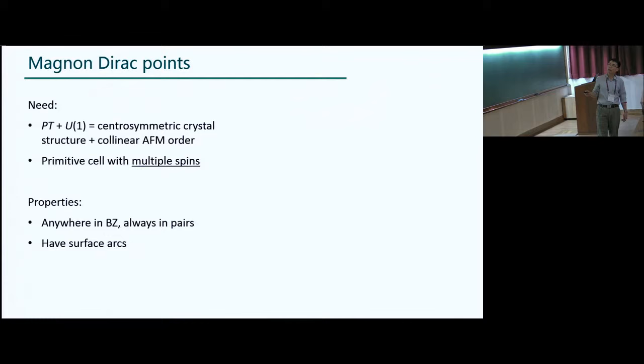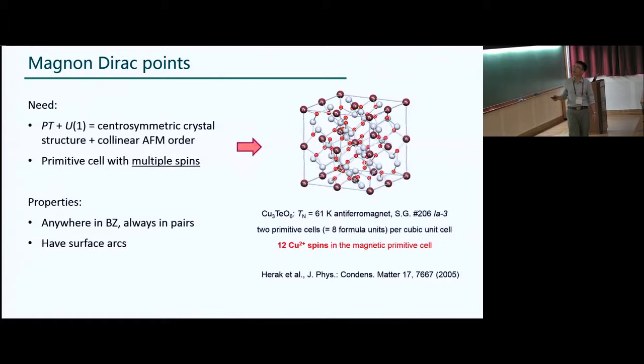So then, on the material side, the requirement is just this symmetry, plus the fact that the magnetic primitive cell must have multiple spins, so that you have multiple magnetic bands to cross into each other. And with this in mind, we actually were very greedy, because we then hunt for material with many spins in the primitive cell. In this case, actually 12 copper spins in the magnetic primitive cell. So this material was discovered a long time ago. It has a three-dimensional Néel temperature of around 61 Kelvin. And space group belongs to a cubic crystal system, 206. And it's a body-centered system, so this box actually contains 24 copper spins, and actually the primitive cell contains 12.